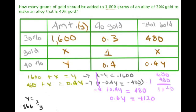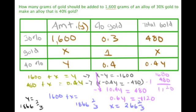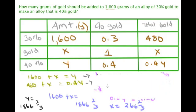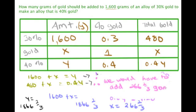So y equals 1866 and two-thirds. Using the first equation, 1600 plus x equals y, so 1600 plus x equals 1866 and two-thirds, which means x equals 266 and two-thirds. Therefore, the amount of gold we would have to add to get the 40 percent alloy is 266 and two-thirds grams. Thanks for watching this video.